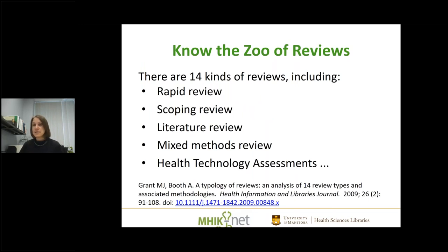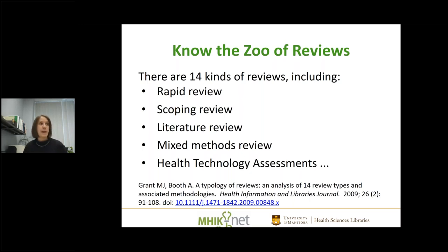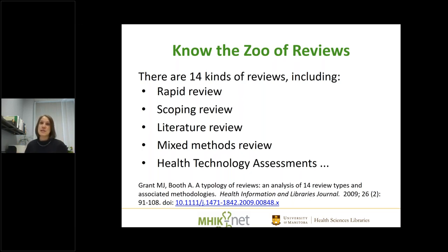There are many other kinds of reviews beyond the systematic review. A rapid review is used when you don't have time to screen thousands of records. A scoping review takes a broader look when you're not sure how much or what kind of evidence exists on a topic — it's less specific about patient, intervention, and outcomes. A literature review is what MyNet does all the time — finding some or all available information on a topic. There are many other kinds as well, and a citation for further reading will be included in the slides.